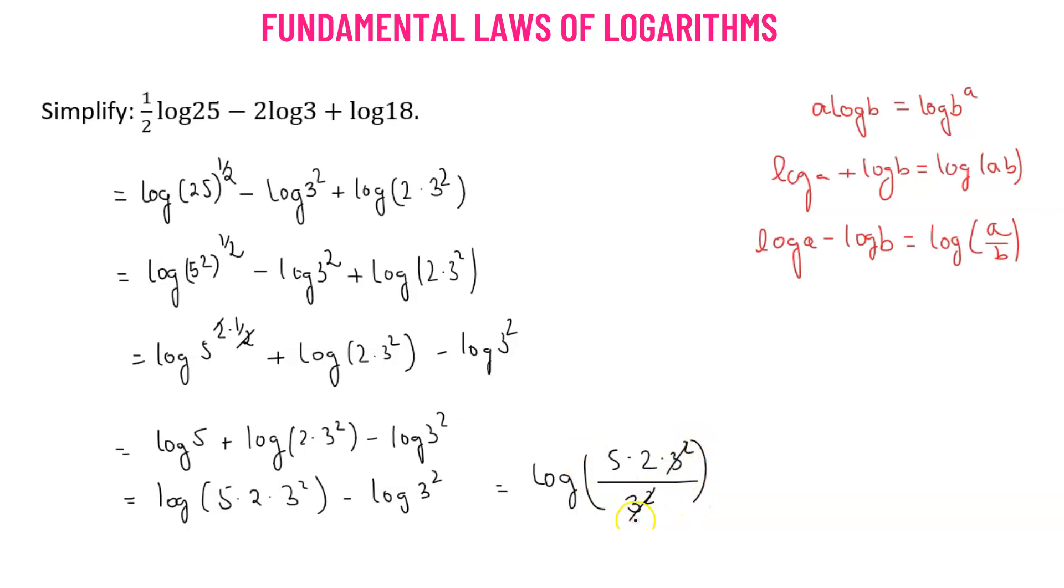We have 3 squared and 3 squared cancelling out. 5 times 2, that's log of 10. And we know the value of log of 10, that equals 1. So this is the value of the given logarithmic expression with a value equals to 1.